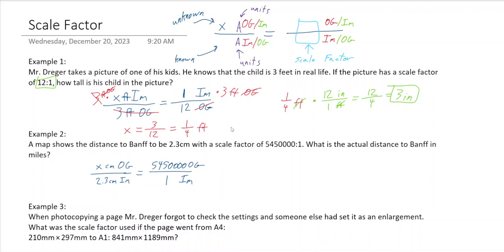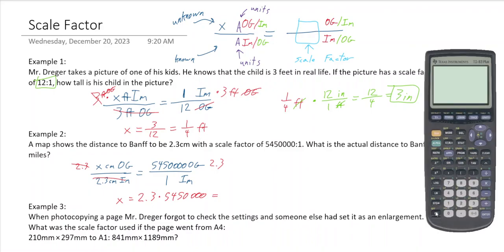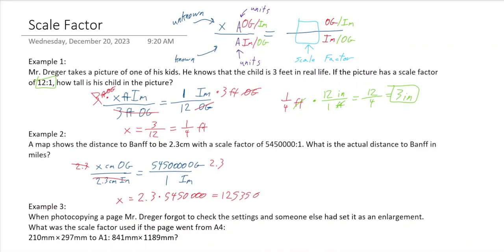We multiply both sides by 2.3 to move it over, so x equals 2.3 times 5,450,000. Calculating that gives us approximately 12.5 million — so the answer is about 12 million something centimeters.